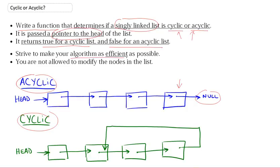Try to make your algorithm as efficient as possible, hopefully a big O of n. And you're not allowed to modify any of the nodes in the list, so you can't tamper with the nodes themselves. You have to leave them as is, you're only allowed to traverse them.